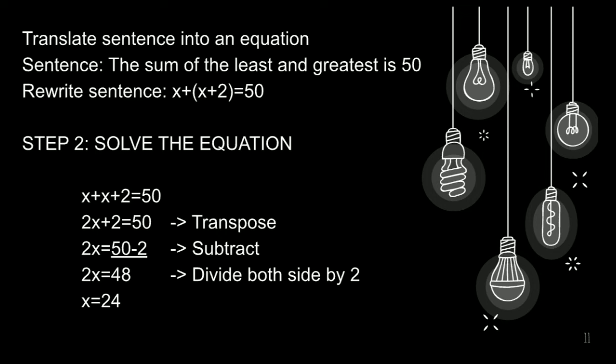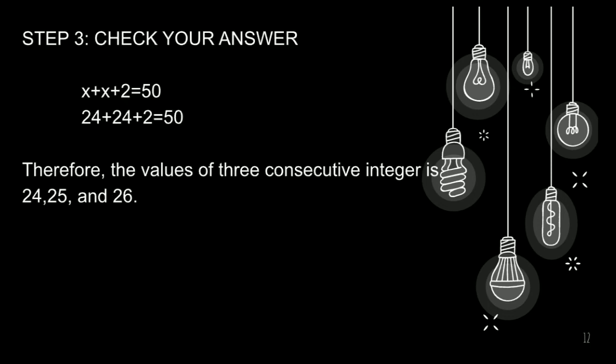Para ma-isolate natin yung x, i-divide natin both side by 2. So, 2x divided by 2 is x. And 48 divided by 2 is 24. Nakuha na natin ang value ng ating x, which is the 24. So, step 3. Check your answer.